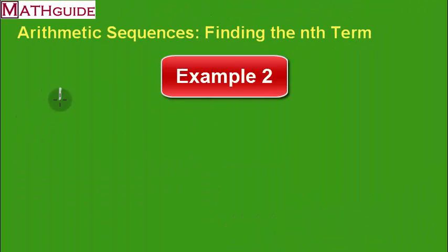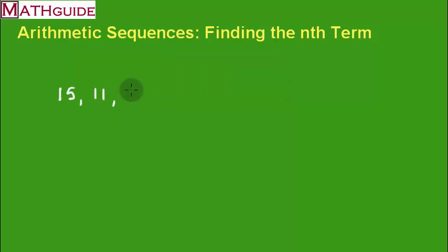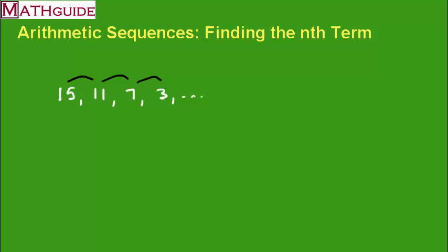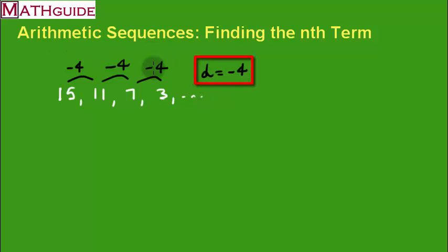Let's take a look at another example: 15, 11, 7, 3, dot dot dot. It's a sequence because the numbers are separated by commas and it goes on forever — an infinite sequence. Is it arithmetic? Let's test it. We take the difference between consecutive values: 11 minus 15 is negative 4, 7 minus 11 is negative 4, 3 minus 7 is negative 4. So the common difference is negative 4, and since the difference is common it is definitely an arithmetic sequence.